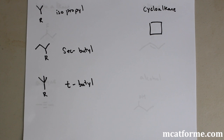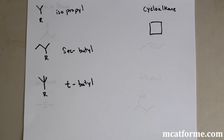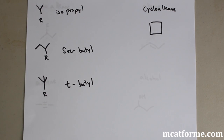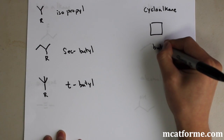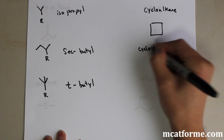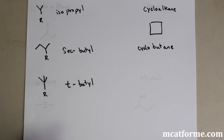Next we're going to talk about cycloalkanes — these are cyclic, meaning they are attached in a circle. This one is still four carbons, so the prefix is 'but', and this is going to be cyclobut-, with the suffix '-ane'. So cyclobutane.